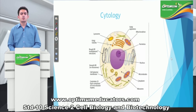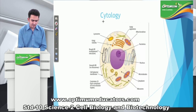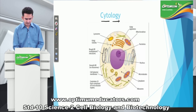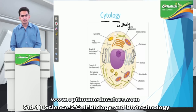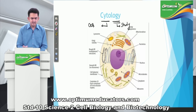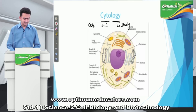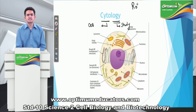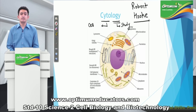As we go further ahead, let us understand what cytology is. The word cytology can be broken down into two parts: 'cyto' means cell, and 'logy' means study. So cytology is the study of cells. We all know there was a scientist who discovered cells for the first time — the name of this scientist was Robert Hooke.